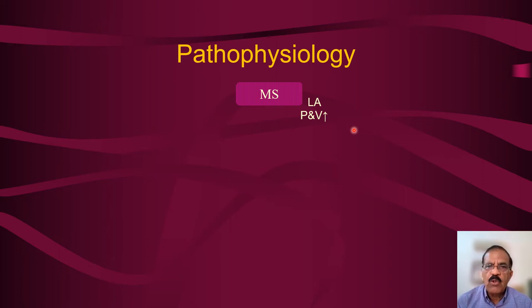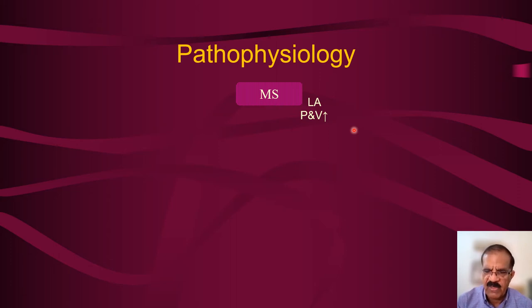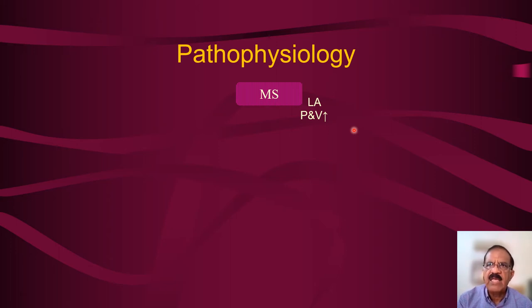Normally the mitral valve is so large that even in the first third of diastole all the blood in the left atrium empties into the left ventricle. In mitral stenosis, blood accumulates in the left atrium, leading to dilatation and increased size of the left atrium. This is a very important sign clinically, radiologically, and on ECG and echocardiogram. Dilatation of the left atrium and increased left atrial pressure is the key pathophysiological component.